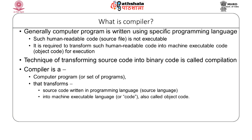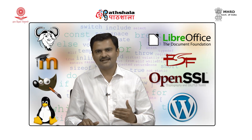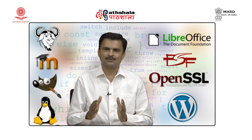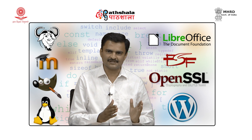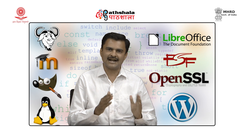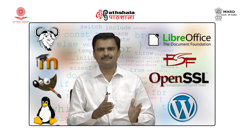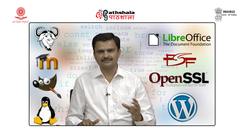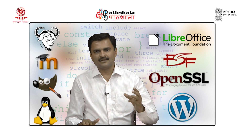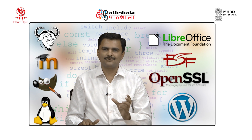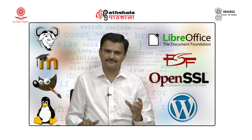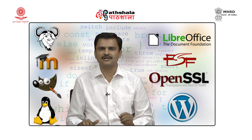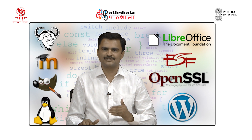Let us understand what is a compiler. Programs written by the programmer are human-readable, but they are not understandable by the computer or the microprocessor. It is required to convert the human-readable code into machine-understandable executable code. That process of conversion is called compilation, and the software which converts human-readable code into executable code is called a compiler.